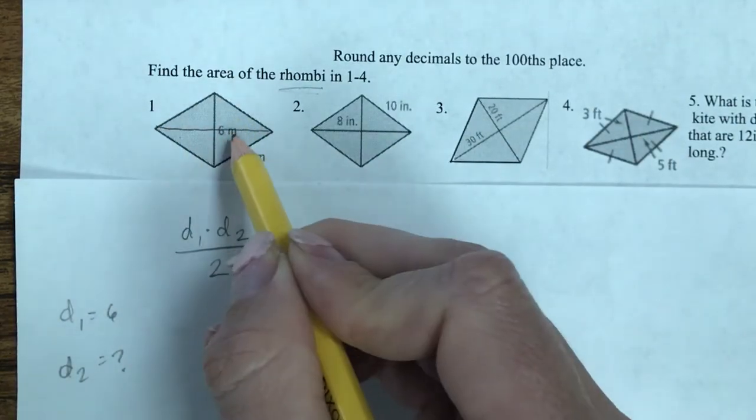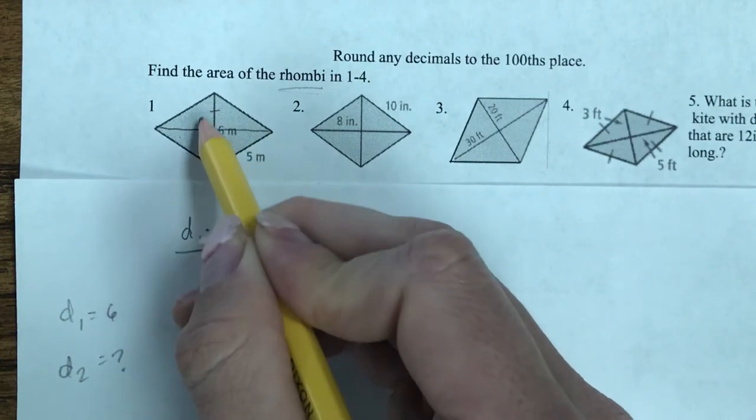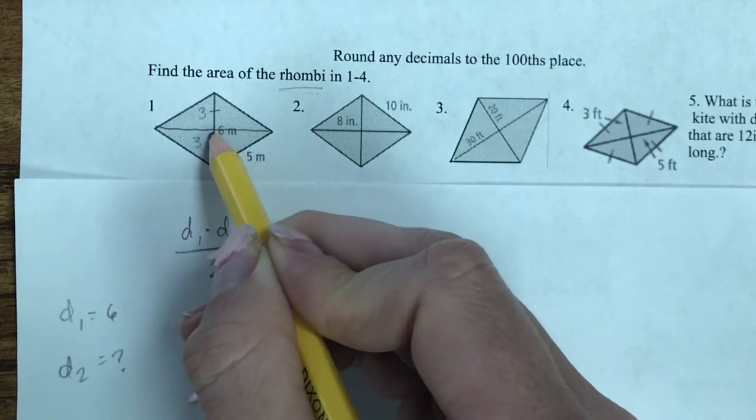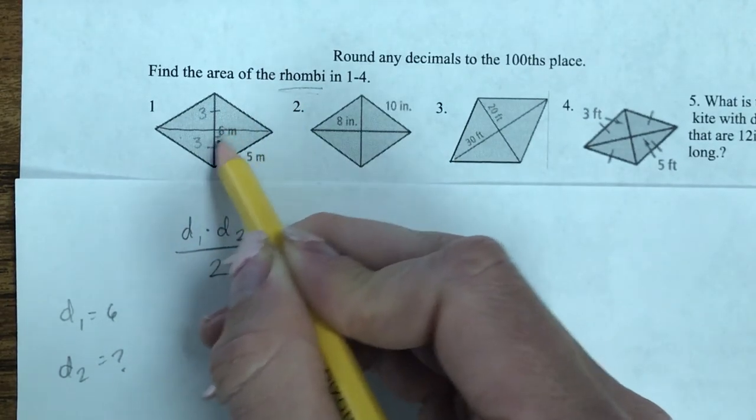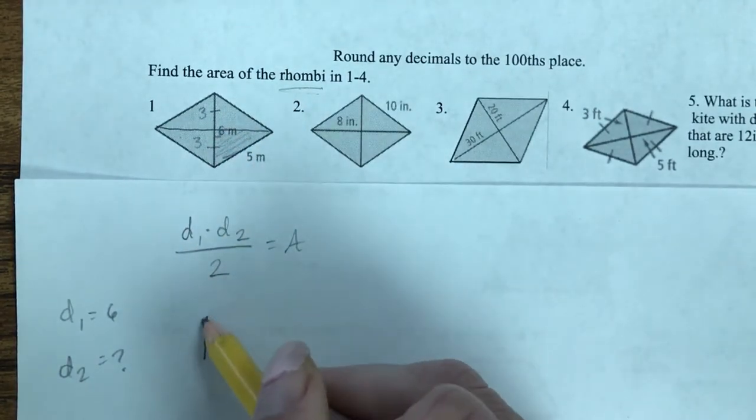Remembering that the diagonals of parallelograms bisect each other, that's going to become 3 and 3. And also the diagonals of a rhombus are perpendicular. So now I can use this little helper triangle right here.